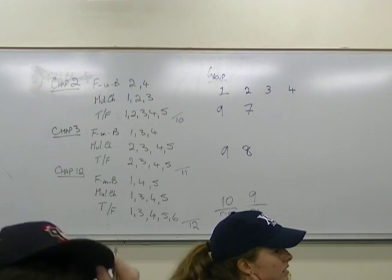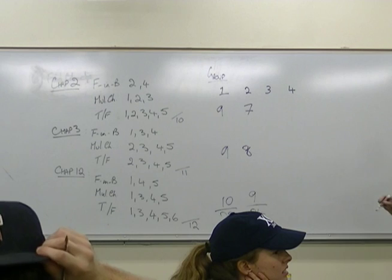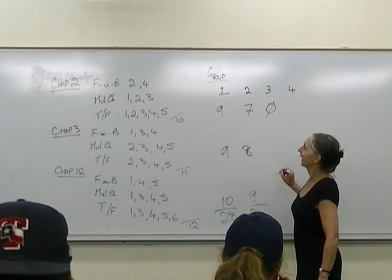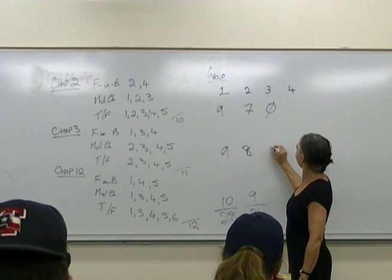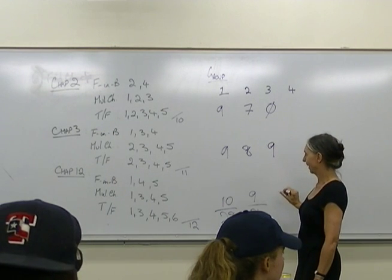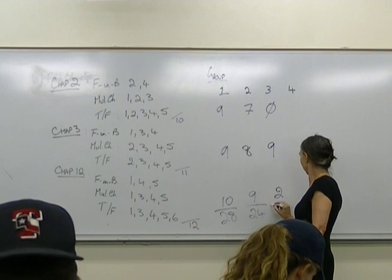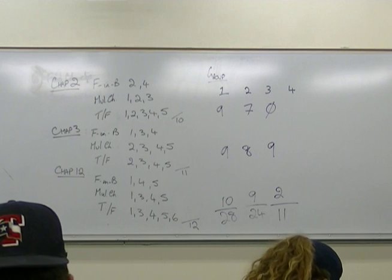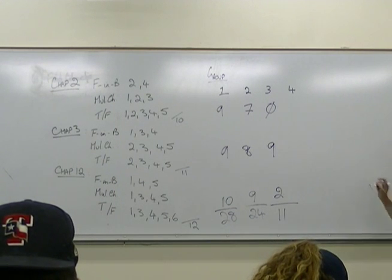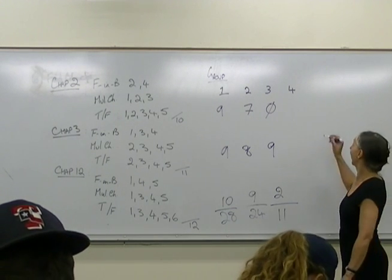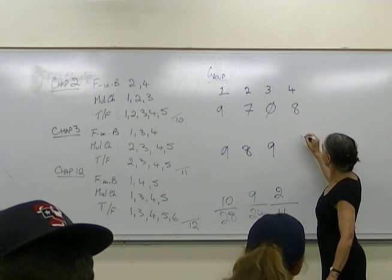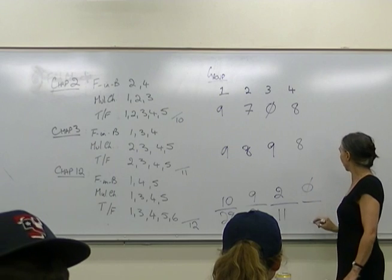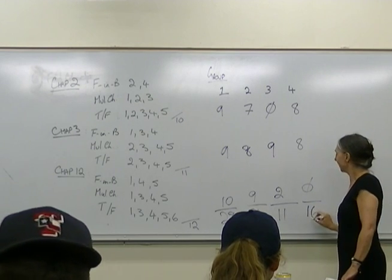Group 3? We haven't finished chapter 2, so chapter 2 is like zero. Chapters 3 and 12 are done. Group 4? We've got 8, 8, and 8. The girls are killing them.